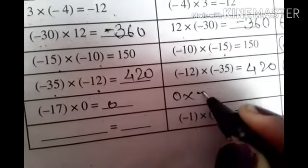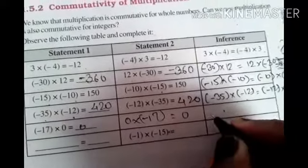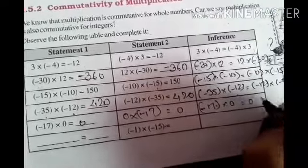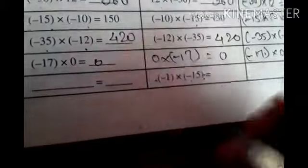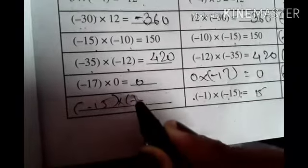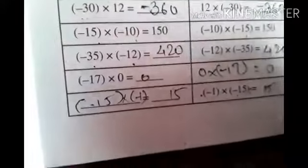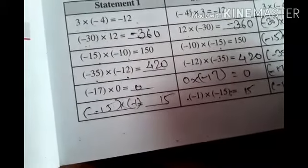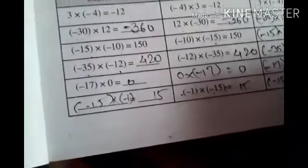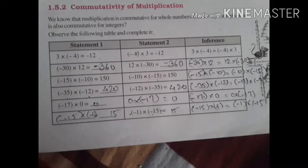Next example: minus 17 into 0 is equal to 0. Likewise, 0 into minus 17 is equal to 0. We can say that minus 17 into 0 is equal to 0 into minus 17. The above examples suggest that multiplication is commutative for integers.